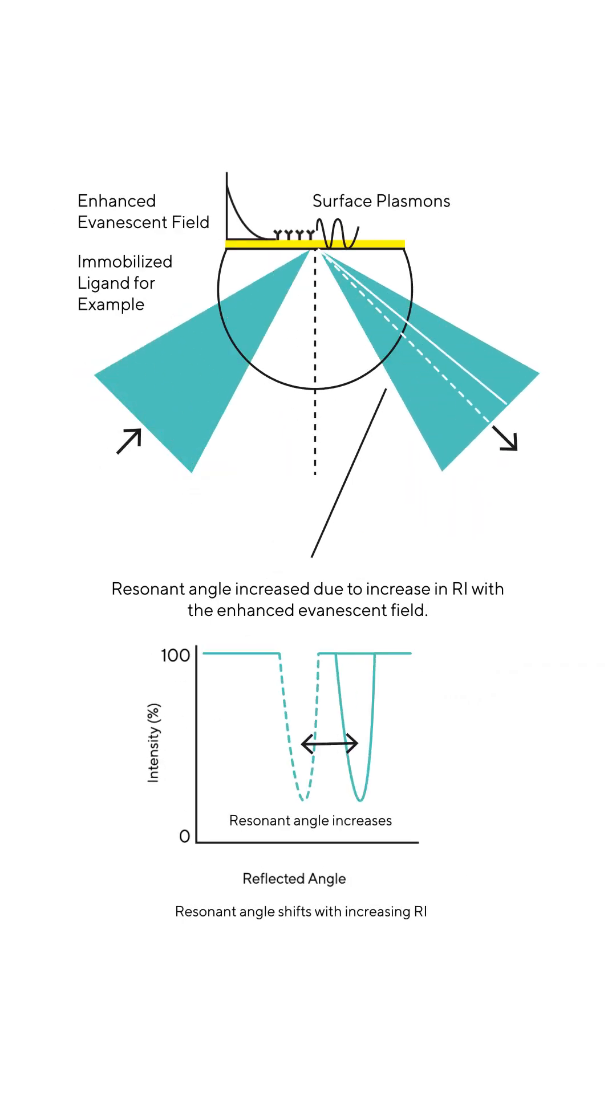This localization of these plasmons to the boundary and external medium makes SPR highly sensitive to any changes that occur within the field of the plasmon wave. Therefore, any change in the refractive index will result in a change of the SPR angle.